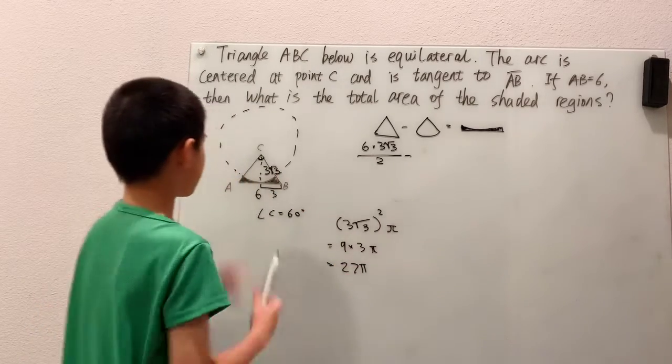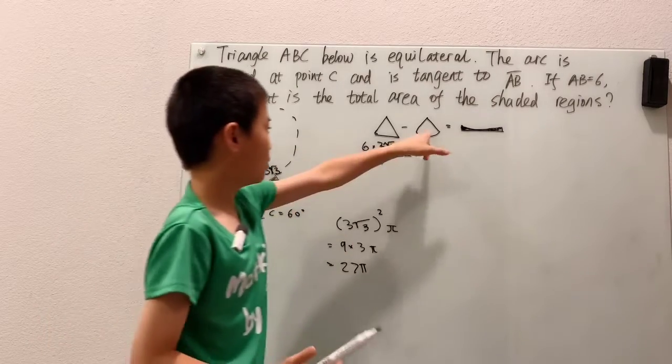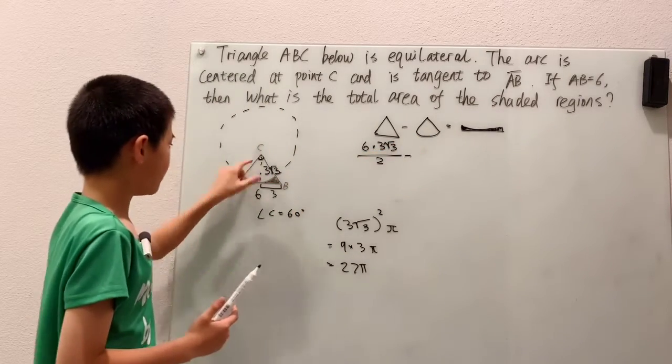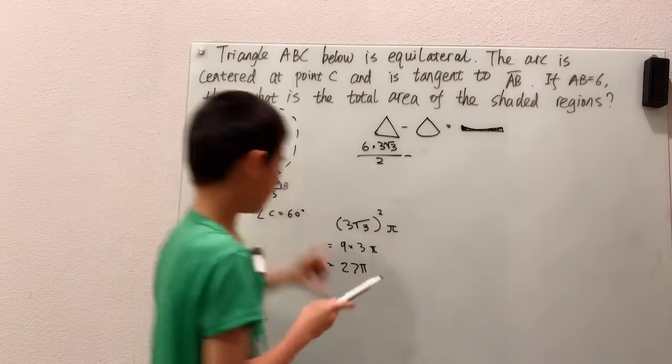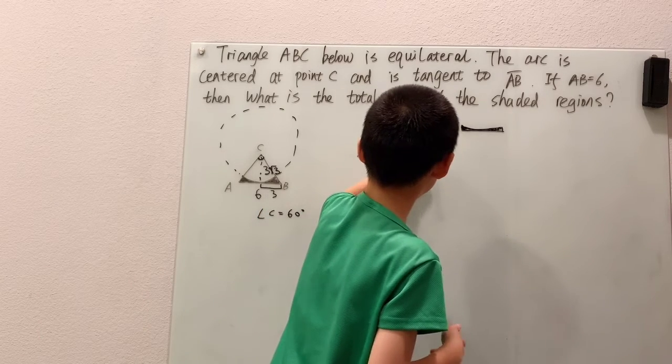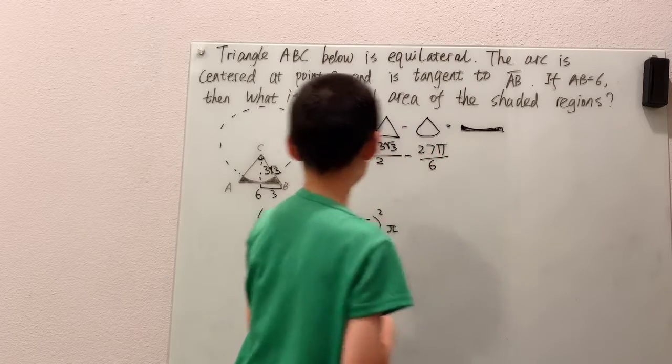Now, if this is the area of our whole big pizza over here, well then, one sector, or one slice of that pizza, has to be 27 pi over six,